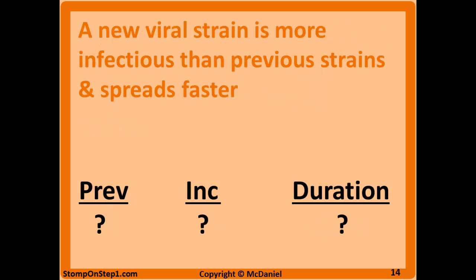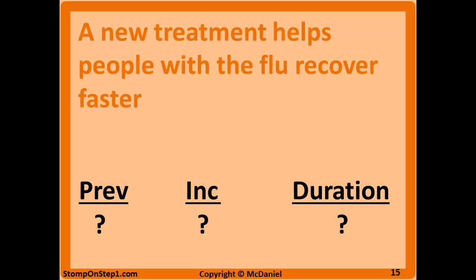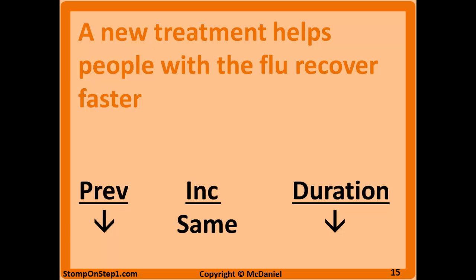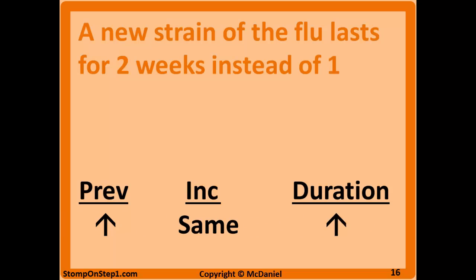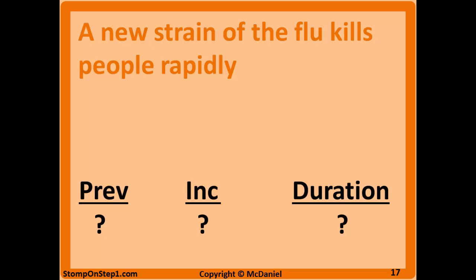Now imagine a new treatment comes out that helps people recover from the flu faster. Duration goes down, so even though the number of new cases is the same, prevalence goes down. You could also think of a new strain that lasts two weeks instead of the normal one — duration goes up, incidence stays the same, and prevalence goes up. If people are now dying within a few days instead of having the flu for a week, the math works similarly to a very effective treatment: duration is shortened, so prevalence drops, whether that's due to cure or death — what matters is the person no longer has the disease.